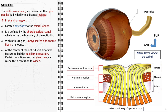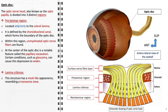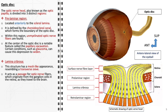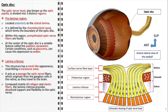In conditions like glaucoma, this depression can deepen, indicating potential nerve damage. The lamina cribrosa, resembling a sieve, is a mesh-like structure located within the optic disc. It serves as a critical junction where optic nerve fibers, stemming from retinal ganglion cells, pass towards the brain. Primarily made up of collagen and elastic fibers, it provides structural integrity and adaptability to the optic nerve, especially important given the variations in intraocular pressure.